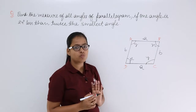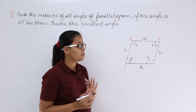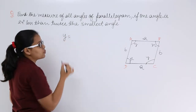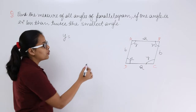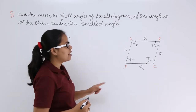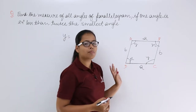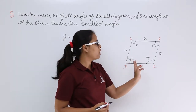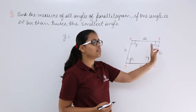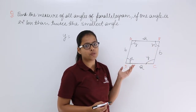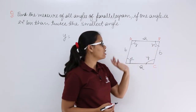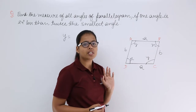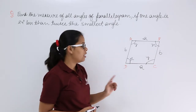Let's suppose x is the smallest angle and y is the greatest one. In this parallelogram there are only two distinct angles, x and y, because the opposite angle of x is also x, and the opposite angle of y is also y.